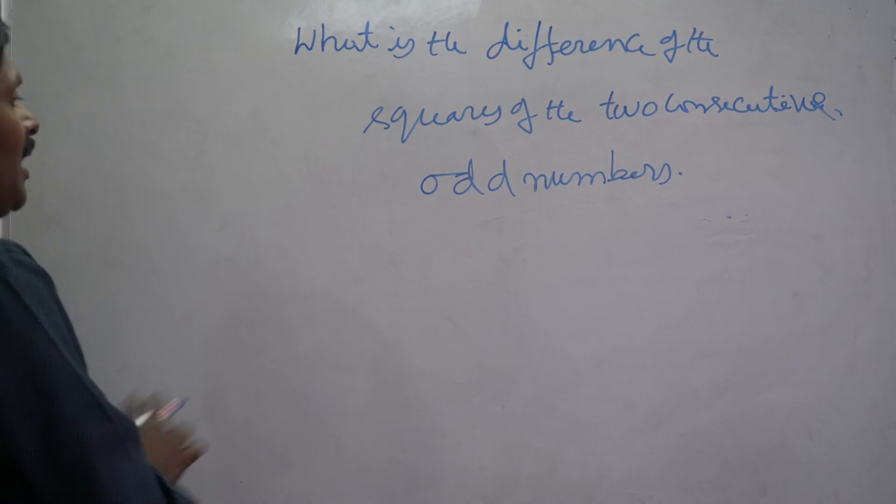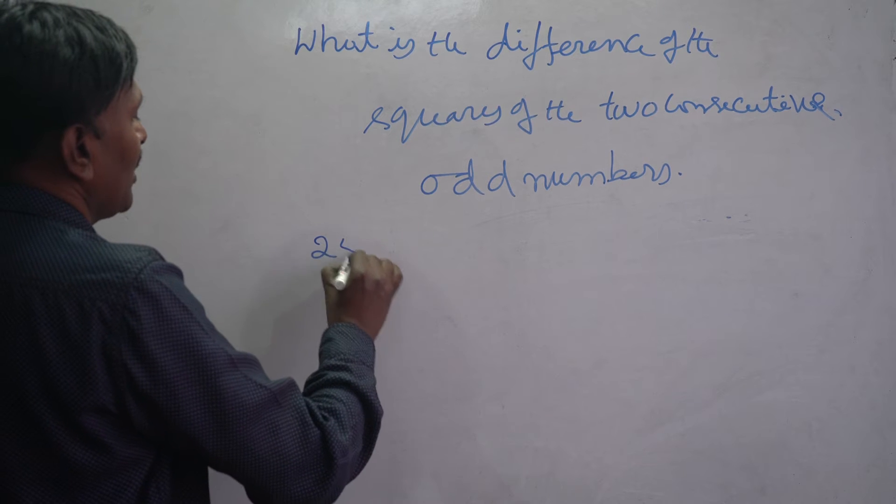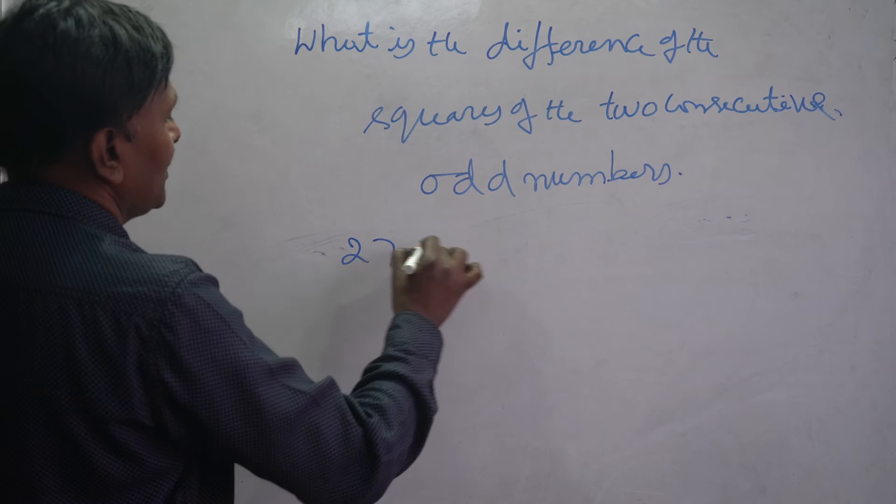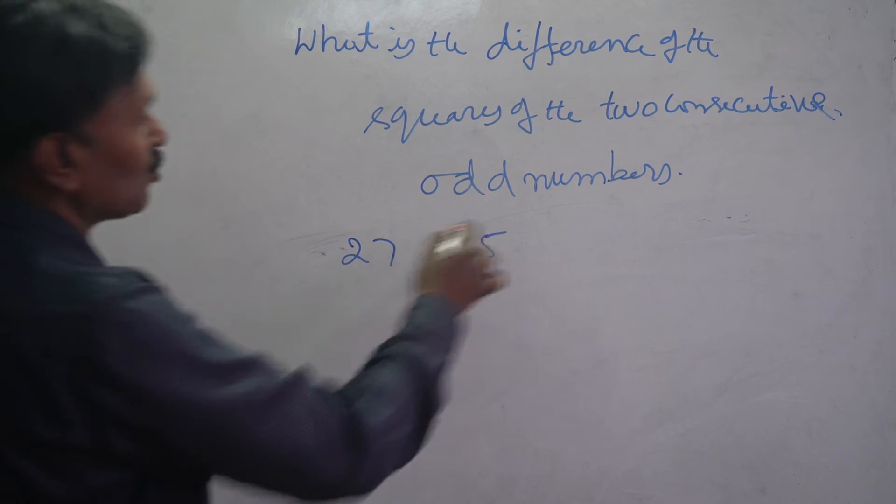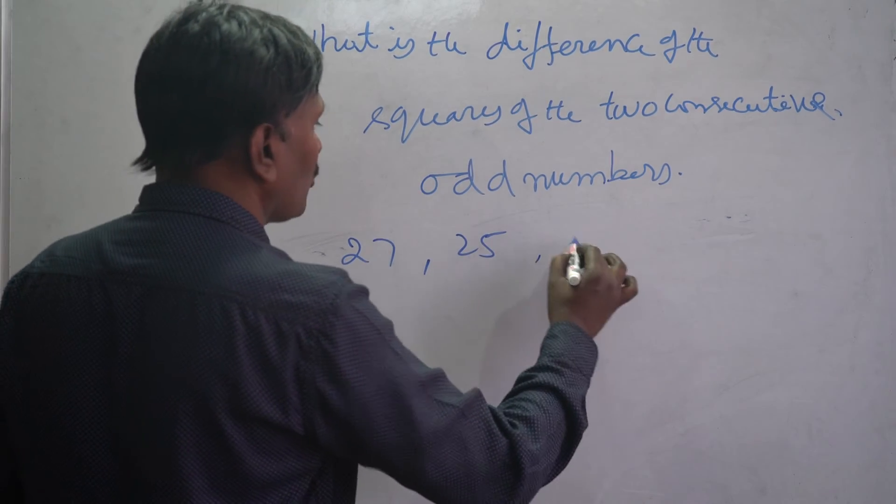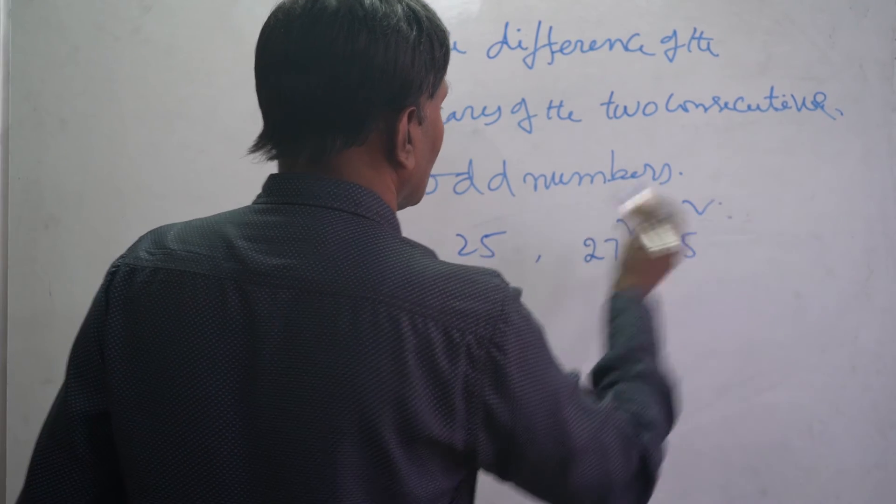Next, if it is 25 or 27. These are two consecutive odd numbers, right? So we have to find 27 square minus 25 square.